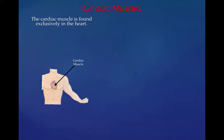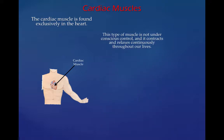The cardiac muscle is found exclusively in the heart, as you can see here in this diagram. This type of muscle is not under conscious control and it contracts and relaxes continuously throughout our lives. The cardiac muscle provides the pumping action that circulates blood around the body.